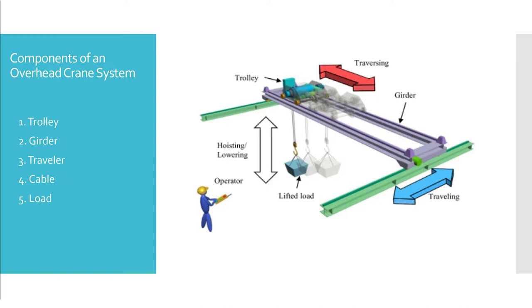Thirdly, the traveler is the guide for traveling motion illustrated by the blue arrow in the image on the right. Fourthly, the cable is suspended from a hoist and relates to a hook on the load. Lastly, the payload is the final component of a basic overhead crane system.